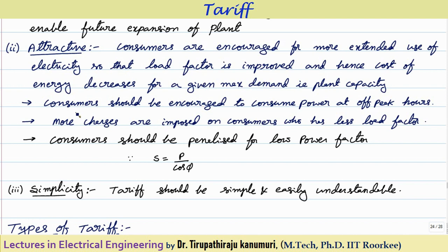Consumers should also be encouraged to consume power at the off-peak hours. For example, during the daytime all the industries will run, during the evening household loads will be there, but in the night time industries and offices are closed, so the load on the station decreases and the overall load factor of your station decreases. To compensate and increase the load factor, we can encourage some consumers to use energy during the off-peak hours. For example, in cities the municipalities' water pumping systems are generally used in the night time because some extra facilities are provided for consuming in the off-peak hours. I am going to take one example of the power bill used in Delhi to explain all these things in detail.